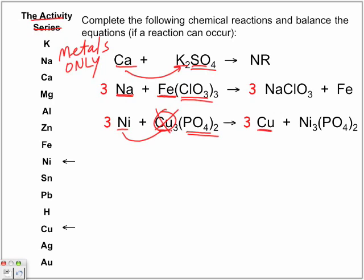Lead and zinc chloride — we look for lead and zinc in the activity series. Zinc is higher in the reactivity series, so zinc has a stronger hold with the chloride. Therefore, lead cannot displace zinc — no reaction.